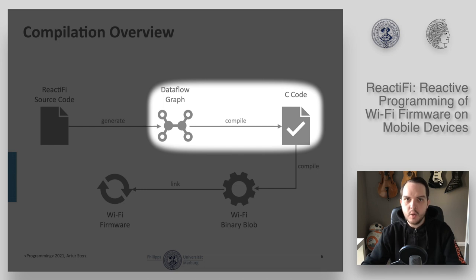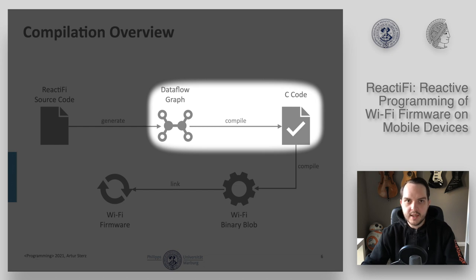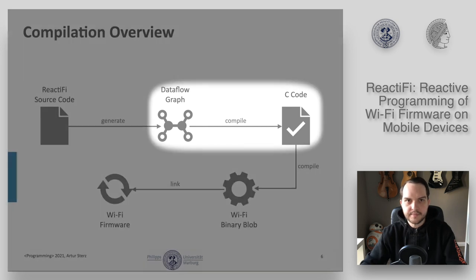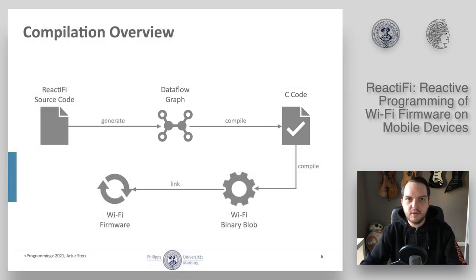Since Wi-Fi chips are not able to execute code concurrently, the logically concurrent ReactiFi code has to be executed sequentially in C. The compiler schedules the compiled C functions sequentially, and reactives with the same conditions are grouped so that on every event the conditions are only checked once. The next optimization concerns memory usage. Wi-Fi chips have only limited memory available, so the compiler frees allocated memory as soon as it is no longer needed — meaning that as long as at least one reactive is referencing a variable, the corresponding memory is not freed.